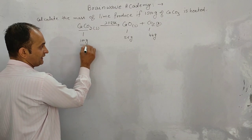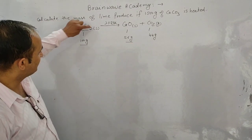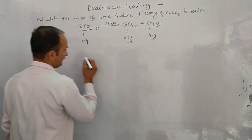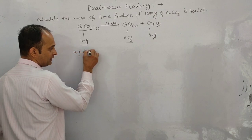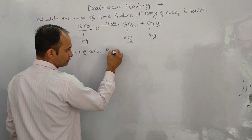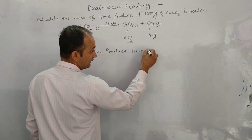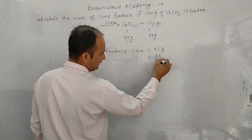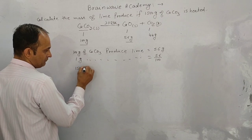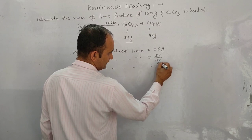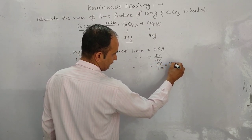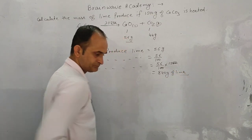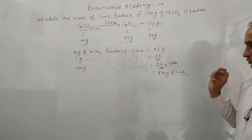Now establish the relationship between CaCO3 and CaO using the unitary method. In the balanced equation, 100 g of CaCO3 produces 56 g of lime. So 1 g of CaCO3 produces 56/100 g. Therefore, 1500 g of limestone produces (56/100) × 1500 = 840 g of lime.